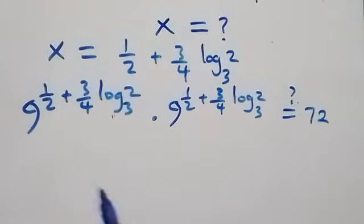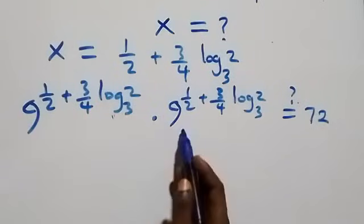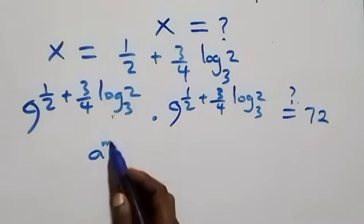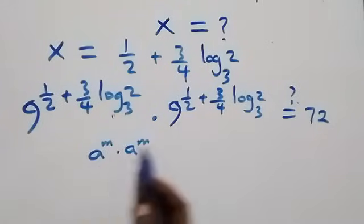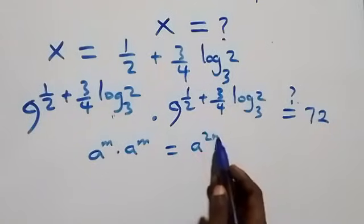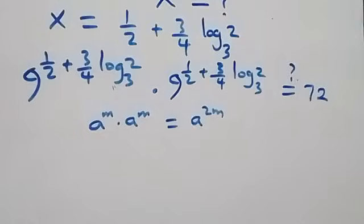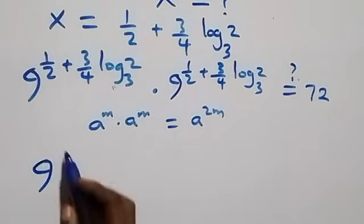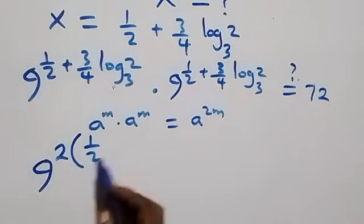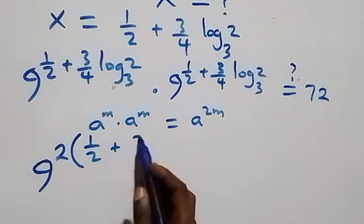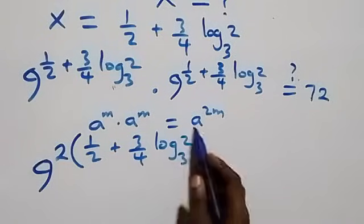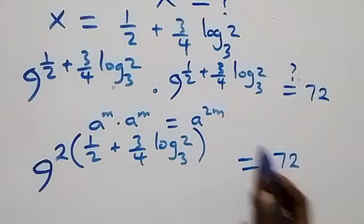Since we have the same base multiplying — a raised to power m times a raised to power m equals a raised to power 2m — this becomes 9 raised to power 2 times (1/2 + 3/4·log₃2), which equals 72.